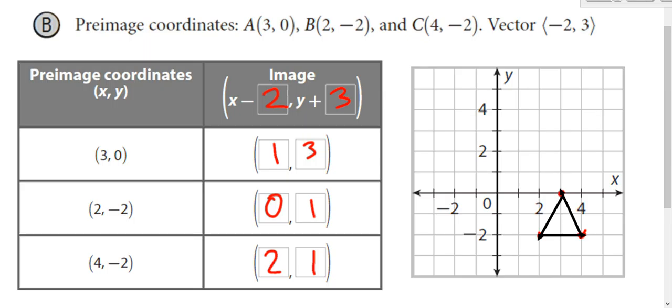And the image after the translation. It's at 1, 3. 0, 1. 2, 1. This is A prime up here. B was over at 2, negative 2, so there's B. This is B prime after the shift. This was A, this was B and C. This is C, so this would be C prime after the translation.